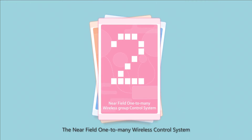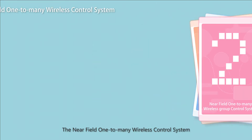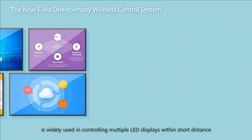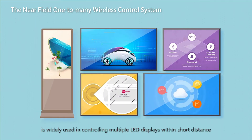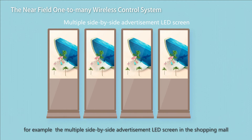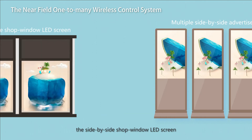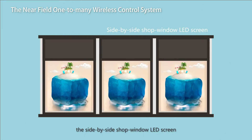The Near Field 1-to-Many Wireless Control System is widely used in controlling multiple LED displays within short distance. For example, multiple side-by-side advertisement LED screens in the shopping mall, or side-by-side shop window LED screens.